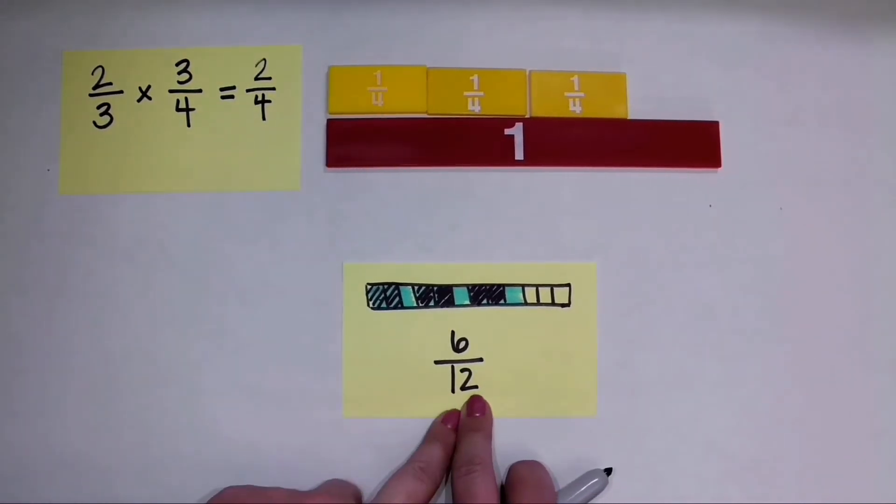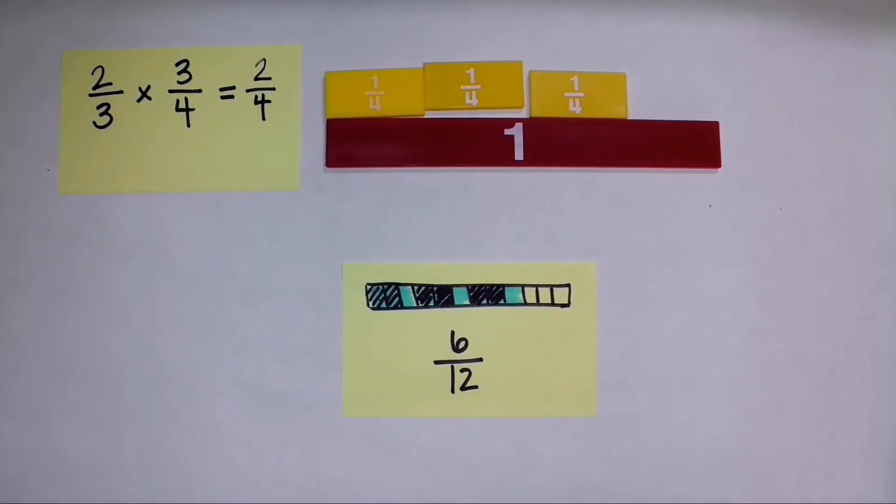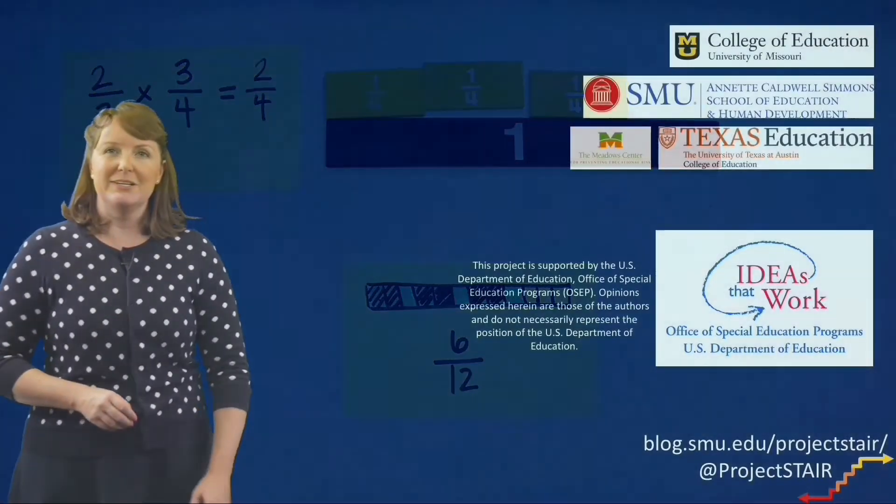And what do we see? 6 twelfths is equivalent to 2 fourths. So both of those methods help us think about multiplication of fractions using the length model.